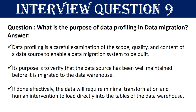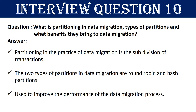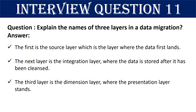If done effectively, the data will require minimal transformation and human intervention to load directly into the tables of the data warehouse. Question 10: What is partitioning in data migration, the types of partitions, and what benefits do they bring? Partitioning in data migration is the subdivision of transactions. The two types of partitions are round robin and hash partitions. Partitions are used to improve the performance of the data migration process.